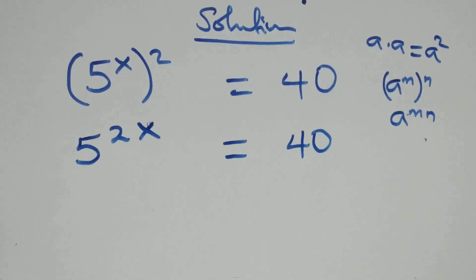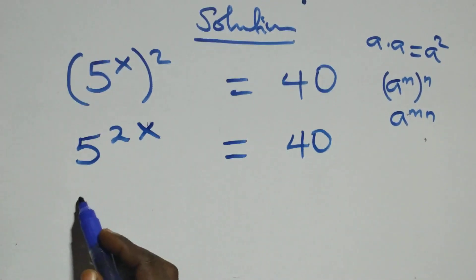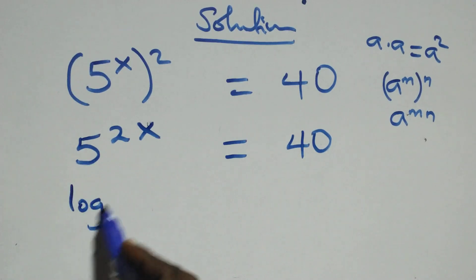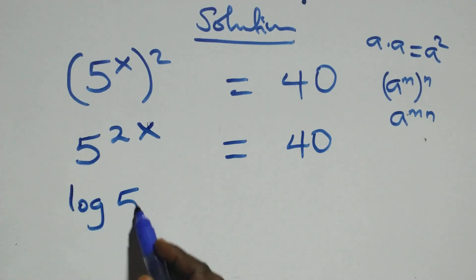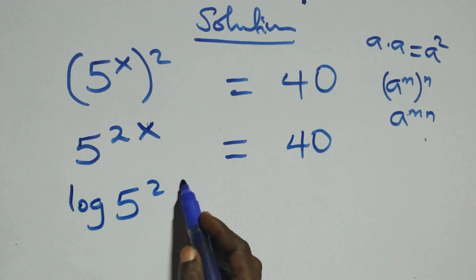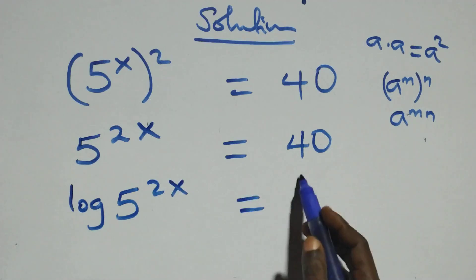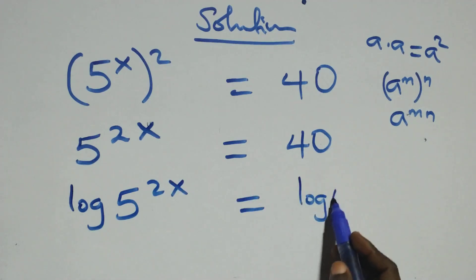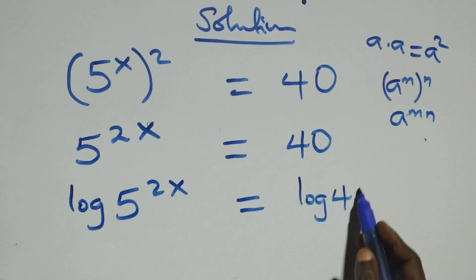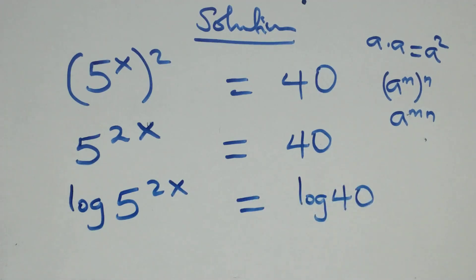The next step: we take the log on both sides. We have log of 5 raised to power 2x, equals log 40.